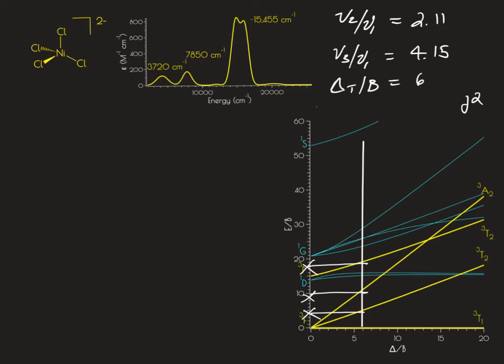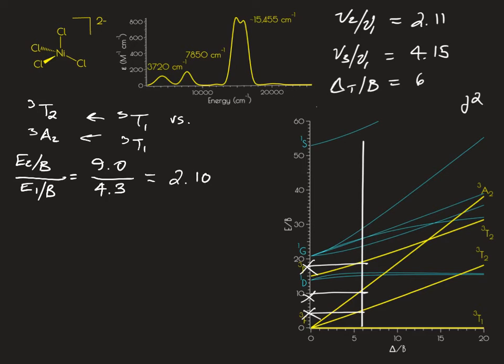For the triplet T1 to triplet T2 versus the triplet T1 to triplet T2, we have an E2 over B over E1 over B equal to 9.0 over 4.3, which equals 2.10, which is reasonably close to the value that we're looking for.